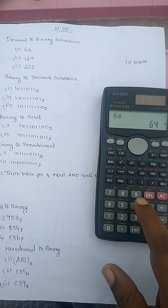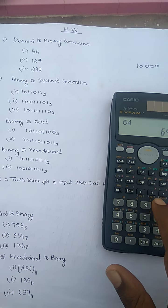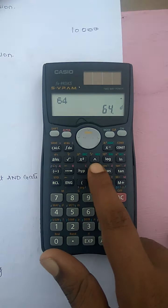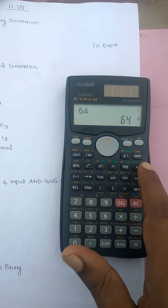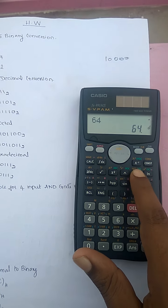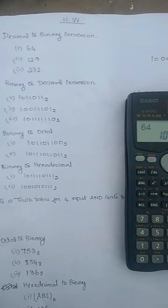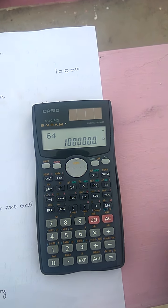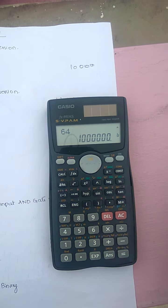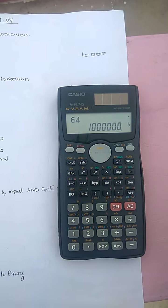You want to convert, you press here. It is showing decimal, hexadecimal, binary, and octal. If you want to convert it into binary, you press binary. So the value for 64 is 1 followed by six zeros.